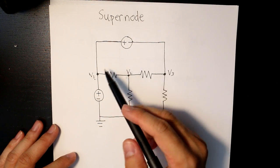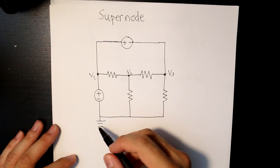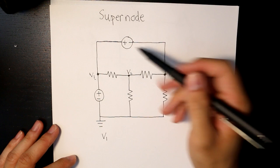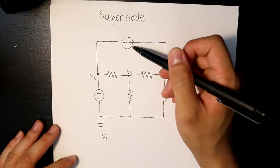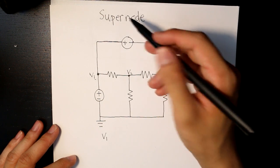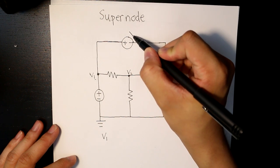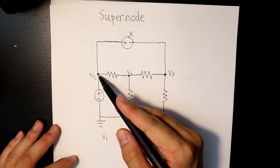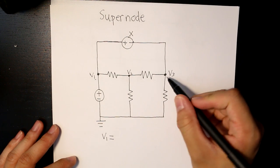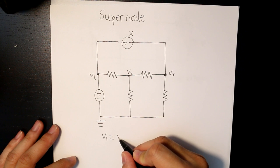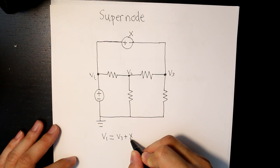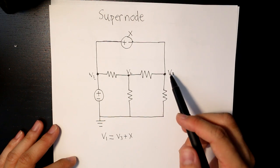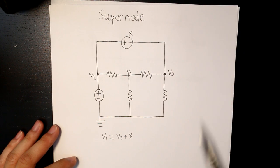And that equation would essentially consist of V1 in this case. And then I forgot to label what the value of the voltage source is, so we can just label this as X. So V1 would essentially be equal to V3 plus X, and we're adding X on the right side where V3 is because V3 is at the lower potential at where V1 is.